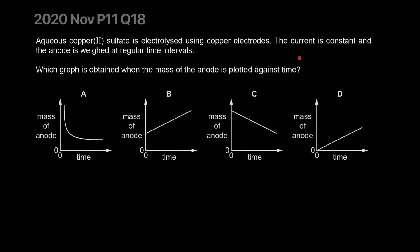Aqueous copper sulfate is electrolyzed using copper electrodes. The current is constant - that's important. Current is the flow of charge or flow of electrons. If current is constant, the change in mass is going to be constant because electrons dictate how the reaction is taking place. And the anode is weighed at regular intervals. So the anode for copper is going to lose mass. Copper will be able to give out its electron to form copper 2+ and produce 2 electrons. It's going to lose mass and it's going to move linearly because the current is constant. Correct answer is C.